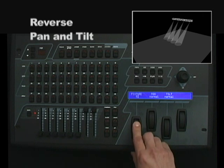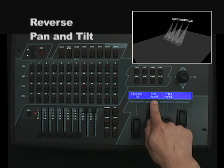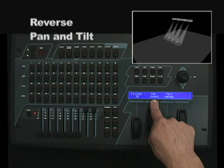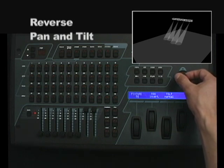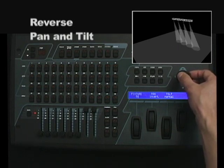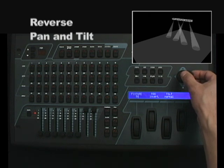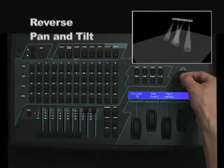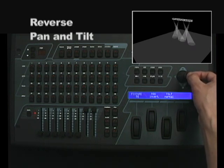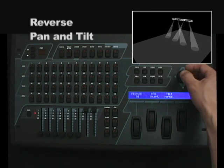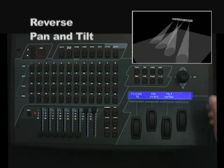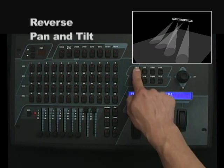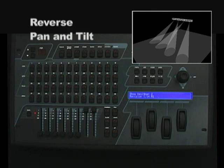I'll use data wheel 1 to scroll to fixture 4, then use data wheel 2 to invert the pan setting for that fixture, and press enter. Now as I use the joystick to move my lights, you'll notice a crossing motion as I'm moving the pan channel of my moving heads. To exit, press the menu button twice, and all inverted settings will then have been stored.